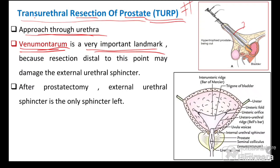The verumontanum serves as a surgical landmark because just below it lies the external urethral sphincter. Since the internal urethral sphincter is damaged during prostatectomy, the external urethral sphincter is the only remaining sphincter. The surgeon resects only up to the level of the verumontanum — going further distally may damage the external urethral sphincter. That concludes the anatomy of the prostate.